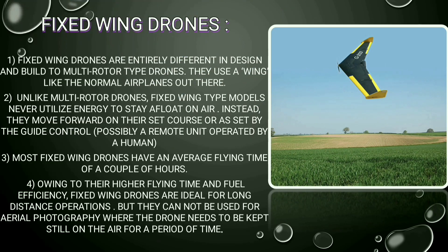The second type is the fixed-wing drone, which is quite similar in design to an aeroplane. Fixed-wing drones are entirely different in design and have an average flying time of a couple of hours. The main disadvantage is that it cannot be used for aerial photography, unlike multi-rotor drones which are built for that purpose and can be kept still in the air. Fixed-wing drones cannot be kept still in the air.